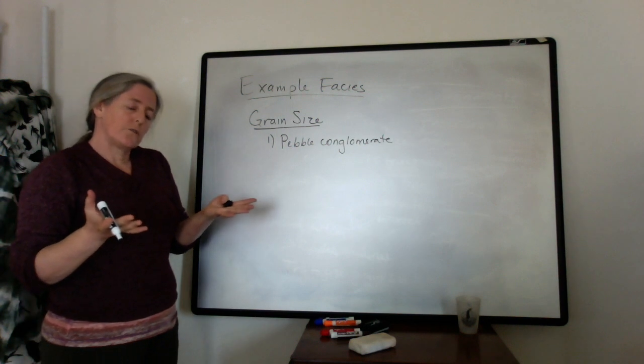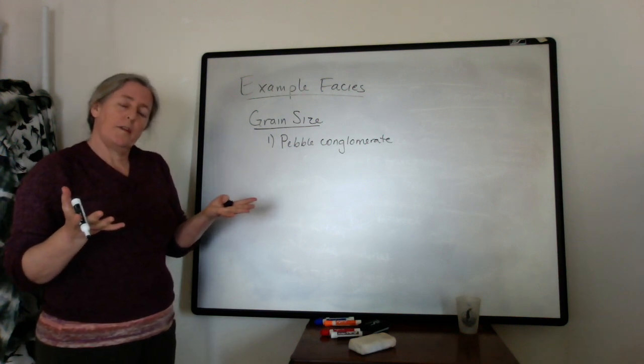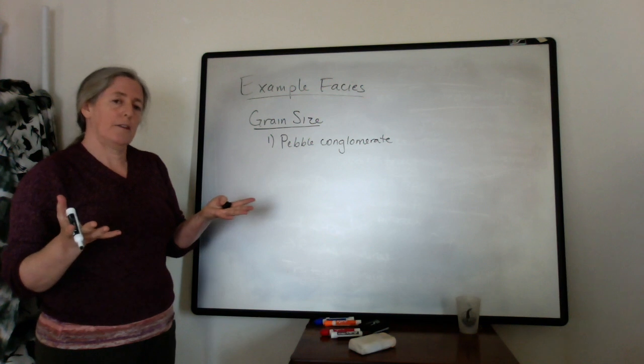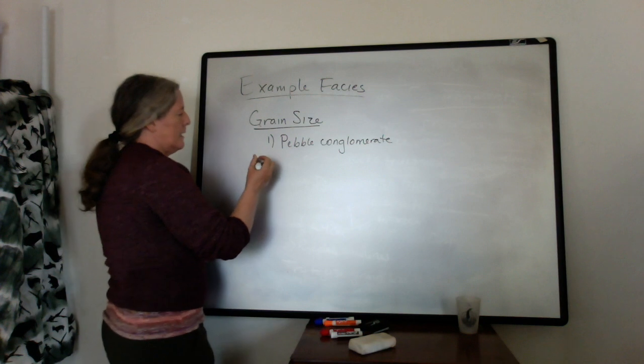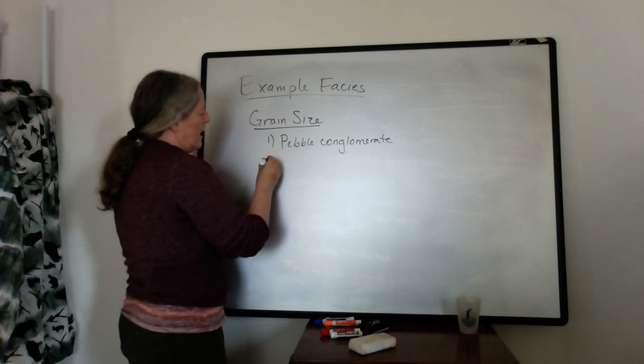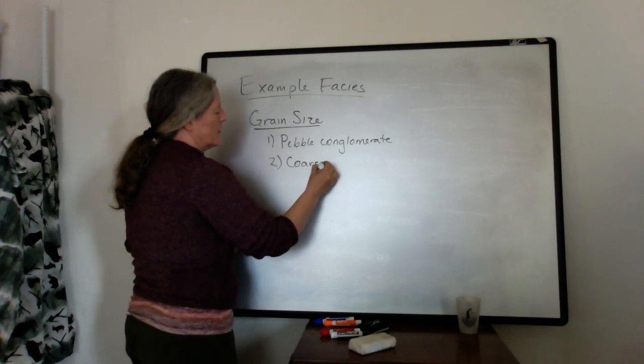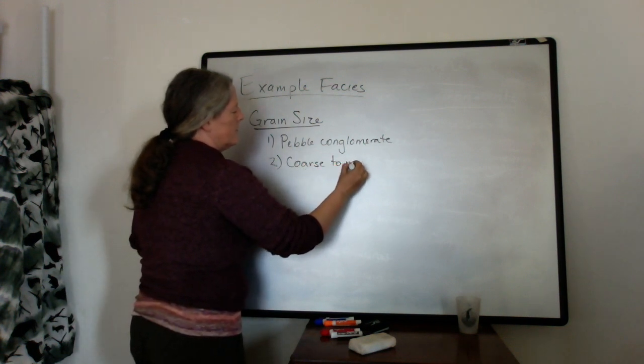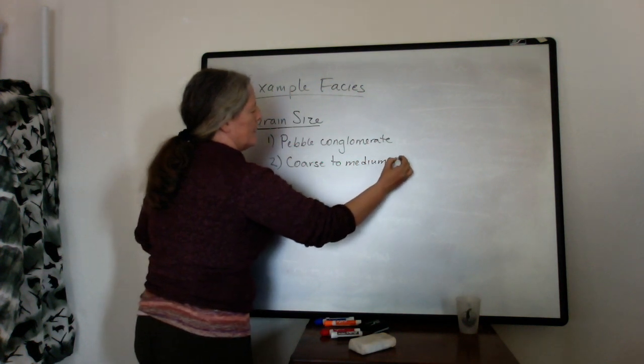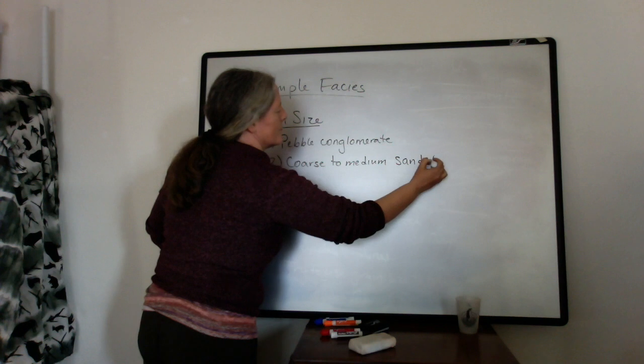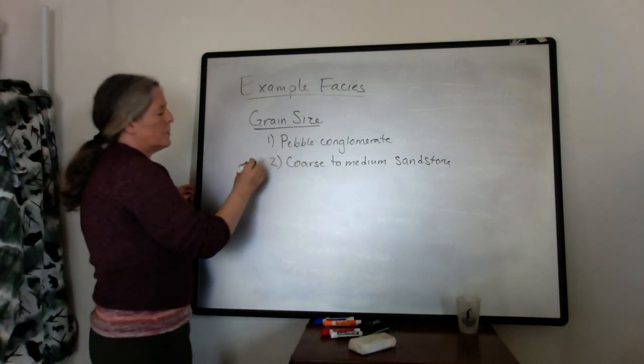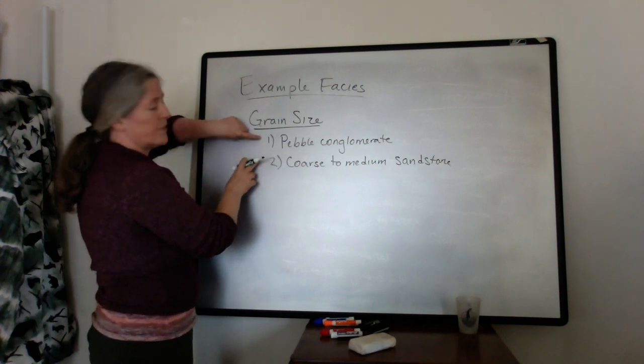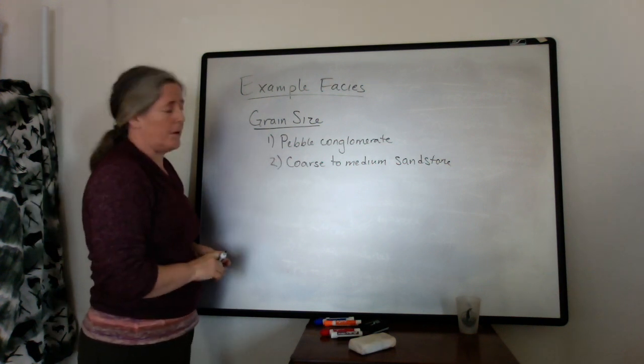As the channel depth gets lower, the Reynolds number decreases and the flow speed also tends to decrease, and so you tend to have finer grain sands. So I might have, in addition, a coarse to medium sandstone. The way I describe these two, there's a difference in the grain size that would be my facies.